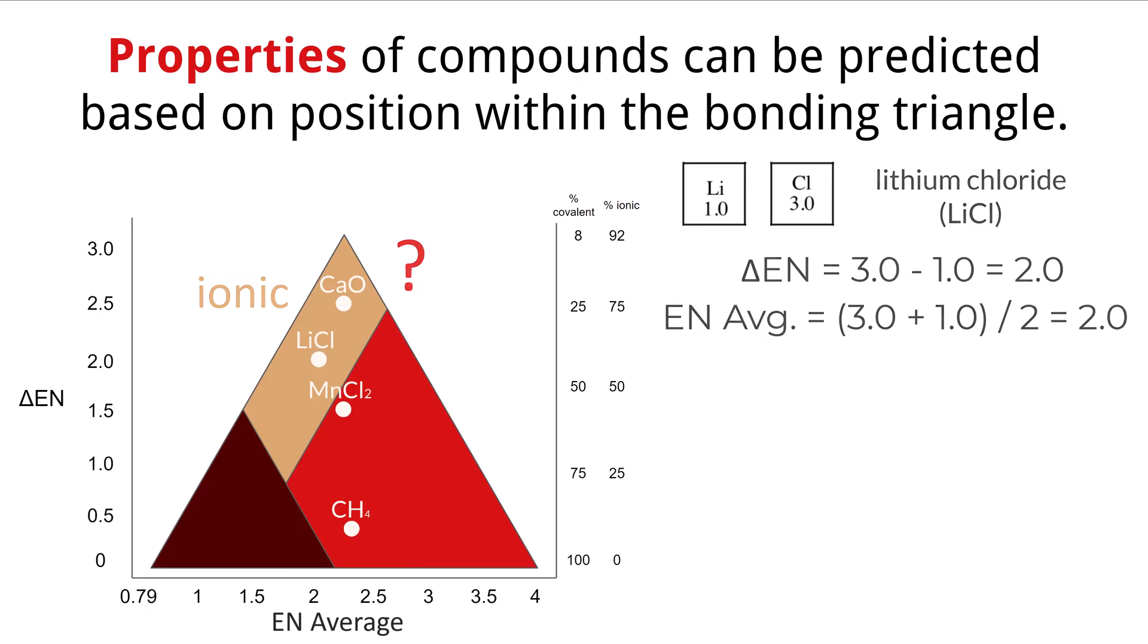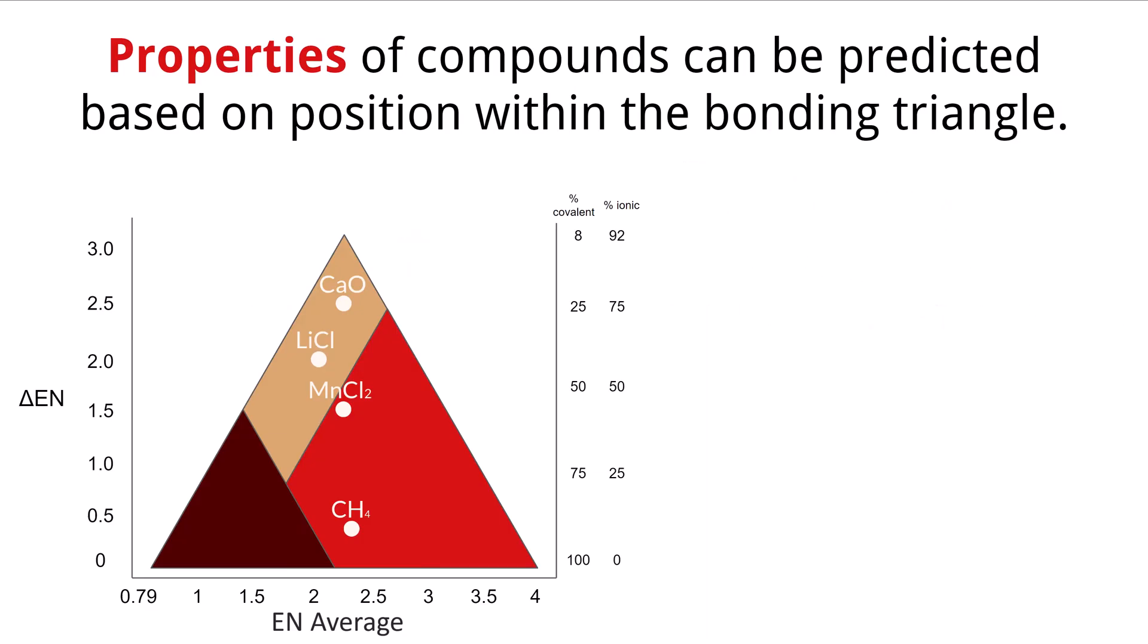Now how does this bonding triangle help us as scientists? As said previously, properties of different compounds can be predicted based on the position they fall within the bonding triangle. Any tool that we can create in science that can predict outcomes is very important and very useful. Having the power to create materials that we can predict the properties of is what makes science so powerful, which is where this bonding triangle comes into play.